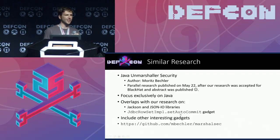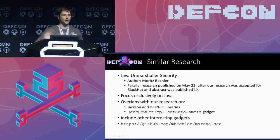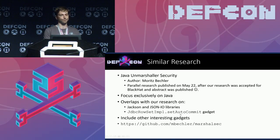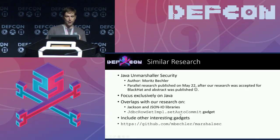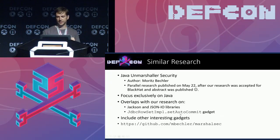Also a big shout-out to Moritz Betzler, a Java security researcher. On May 22 he published the Java Marshalling Security paper, which has similar premises and conclusions. He overlaps with our research in the Jackson and JSON-IO libraries — although for JSON-IO he found a completely different vector — and in the JdbcRowSetImpl gadget. He also found other interesting gadgets for Java in third-party libraries like Spring. If you're interested in a more Java-focused version of this talk, go check his work.